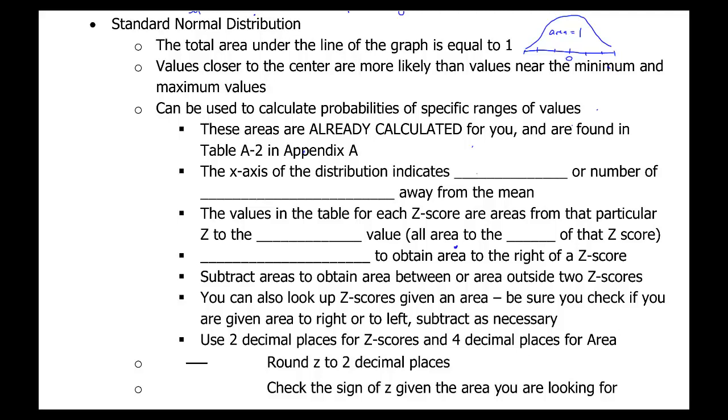The x-axis of the standard normal distribution are Z scores. And we learned already that the Z score is just how many standard deviations the value is away from the mean. The values in the table for each Z score are areas from that particular Z to the minimum value, which is all the area to the left of that Z score. Let's just take a quick look at what that means.